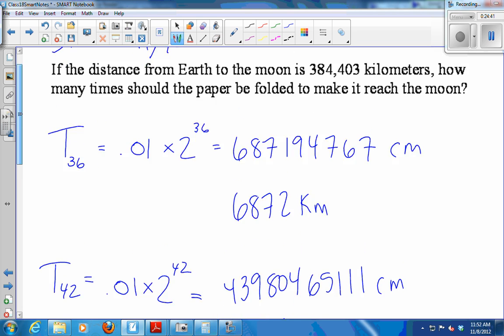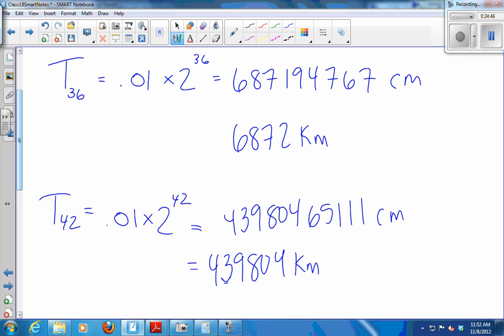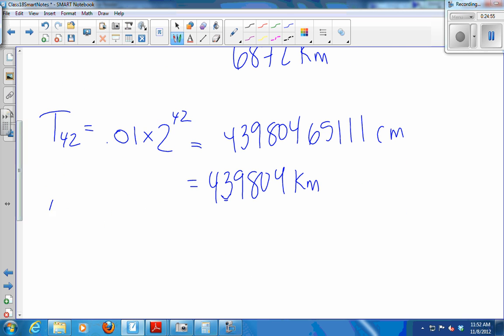Which is a little bit further away than the moon is, right? The moon is 384. And this is 439. So this is a little bit bigger than necessary. But if we went back to T41, I would have to halve this. And that would not be big enough. So I'd say 42 folds gets us past the moon. 42 folds gets past the moon. Now, do you need to do the divide by 100 first or divide by 1,000? It doesn't matter. It doesn't matter. Yep.